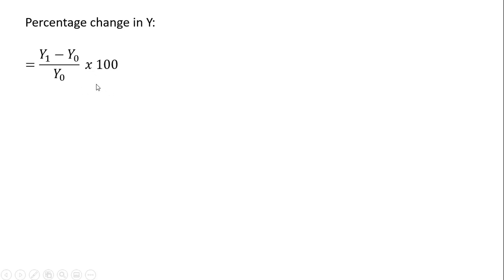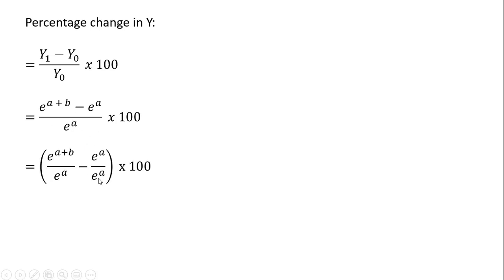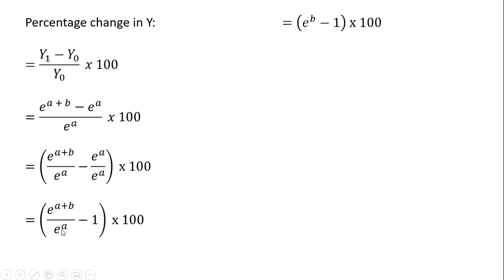To get out of decimal form, we multiply by 100. y₁ equals e raised to a plus b, and y₀ equals e raised to a. Substituting into the percentage change formula and simplifying: e to the a over e to the a is just 1, so we get minus 1. Following the rules of exponents, the a's cancel, and you're left with the interpretation: the percentage change in y equals 100 times (e^b − 1).